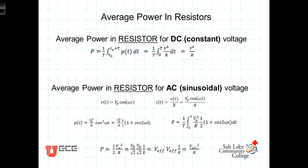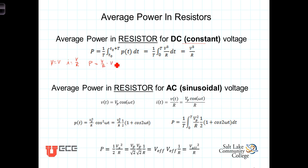Let's continue our discussion regarding average power by looking first at the average power delivered to a resistor. To begin, let's remind ourselves what the power calculations were for a DC source. In a DC source the voltage is V and the current using Ohm's law is V over R. So the power in a DC source equals I times V, which is V over R times V, which is V squared over R.